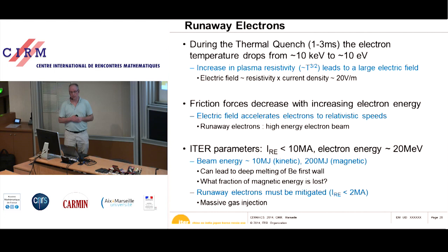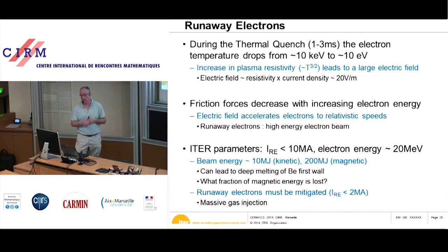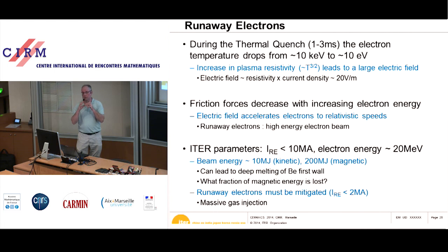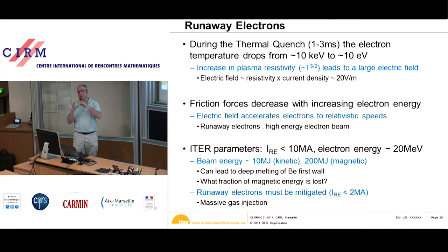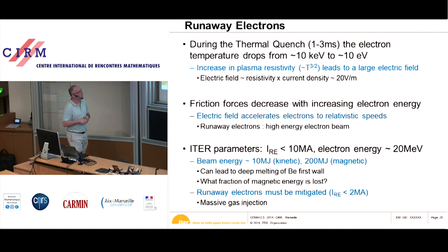Runaway electrons are created during the current quench, when the plasma temperature has gone from thousands of electron-volts to about 100 eV, creating a large electric field. This field drives fast electrons because the friction an electron experiences moving through the plasma decreases with its energy. In a high electric field the plasma creates a beam of fast electrons with energies up to 20 mega-electron-volts in ITER. The current can be up to 10 mega-amperes — most of the plasma current carried by these fast electrons in a tight beam.